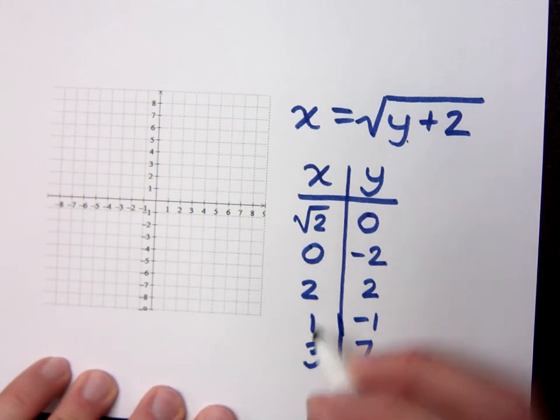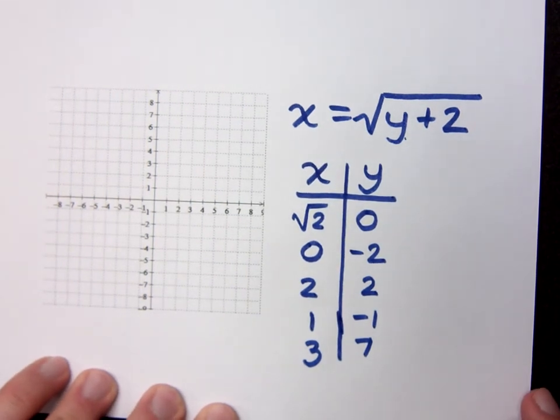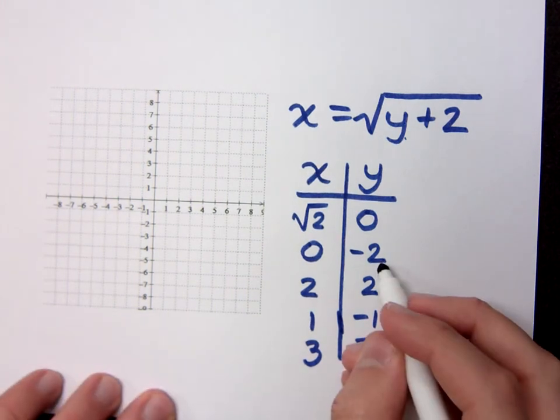Now I'm going to stop here because I'm going to start running out of room in terms of what I have here on my graphing window. I'll tell you right now, I'm not going to graph the square root of 2. Do you know what the square root of 2 is? Just let it go. The square root of 2 is about 1.414. So let's plot the easy guys. 0, negative 2.